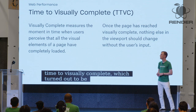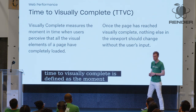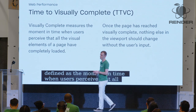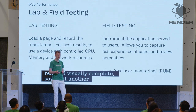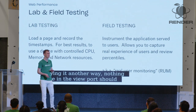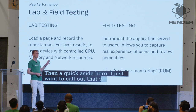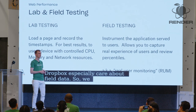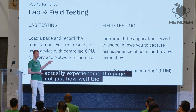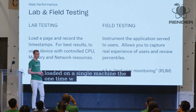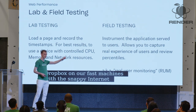Time to Visually Complete is defined as the moment in time when users perceive that all visual elements on the page have loaded. Once the page has reached Visually Complete, nothing else in the viewport should change without the user's input. And we at Dropbox especially care about field data — we want to be able to tell how our users are actually experiencing the page, not just how well the page loaded on a single machine at Dropbox on our fast machines with a snappy internet connection. There are two different ways you can calculate metrics, and we really care about getting this field data.